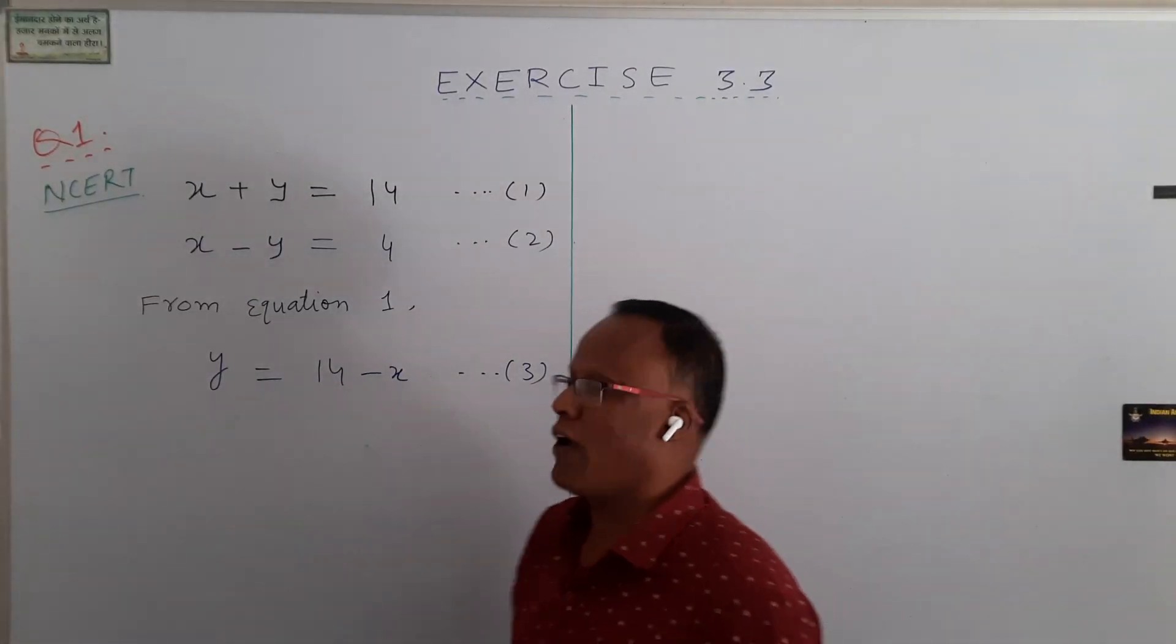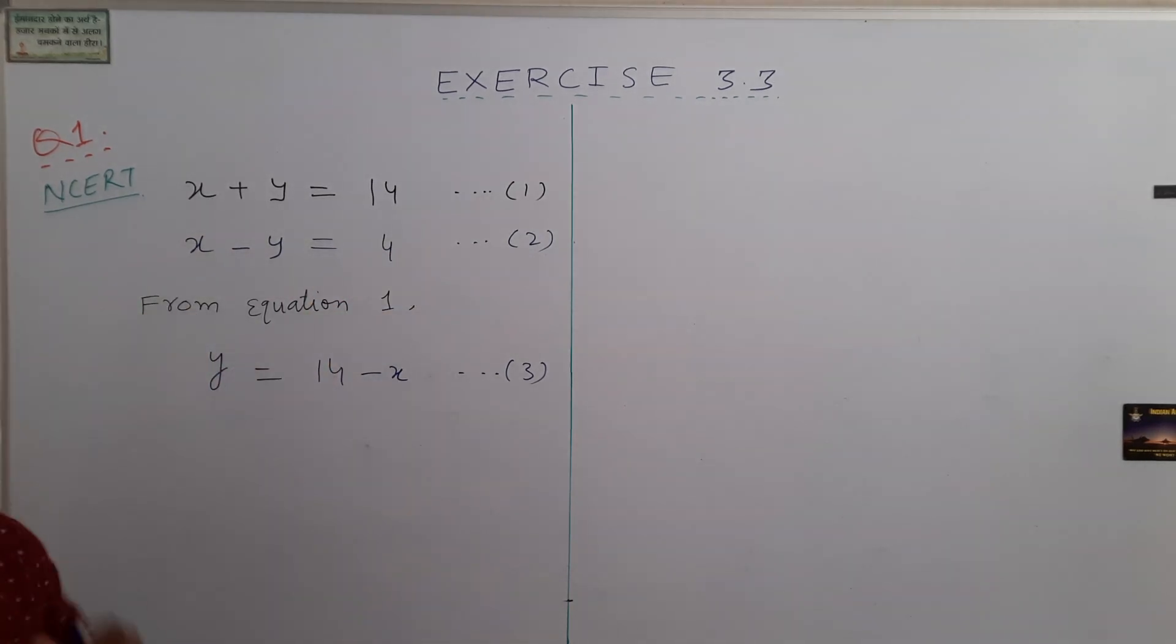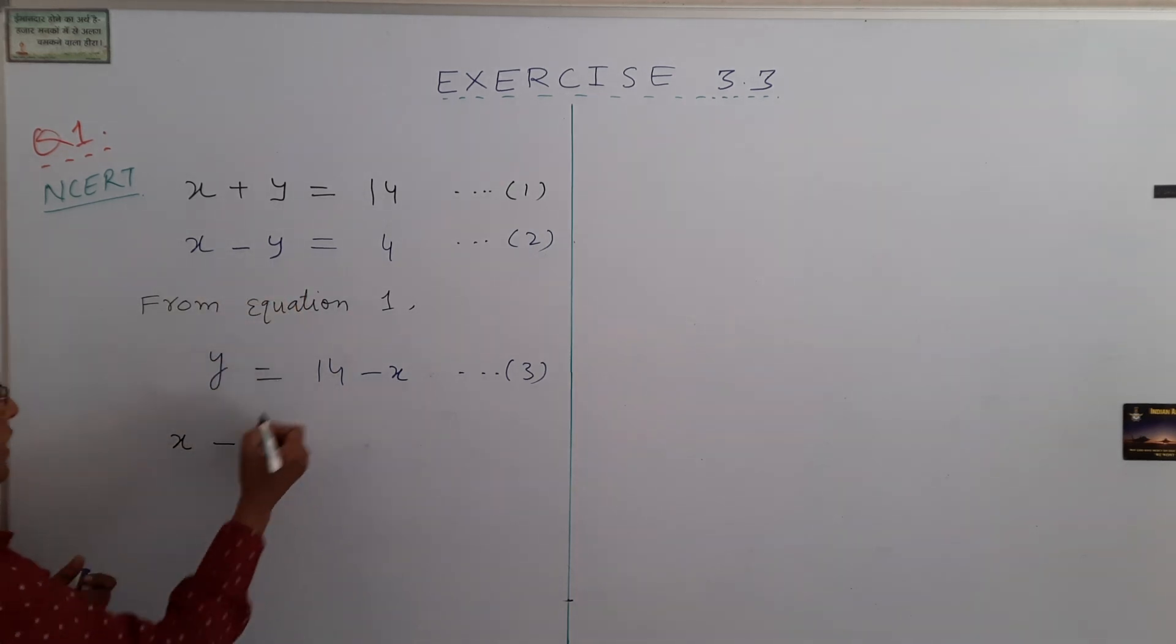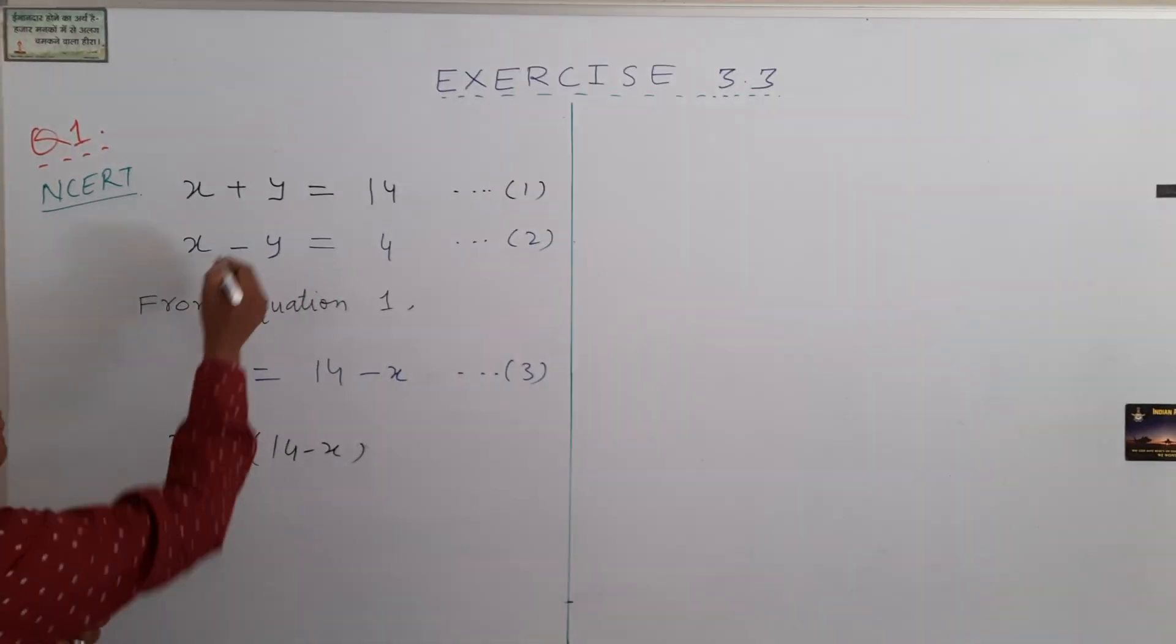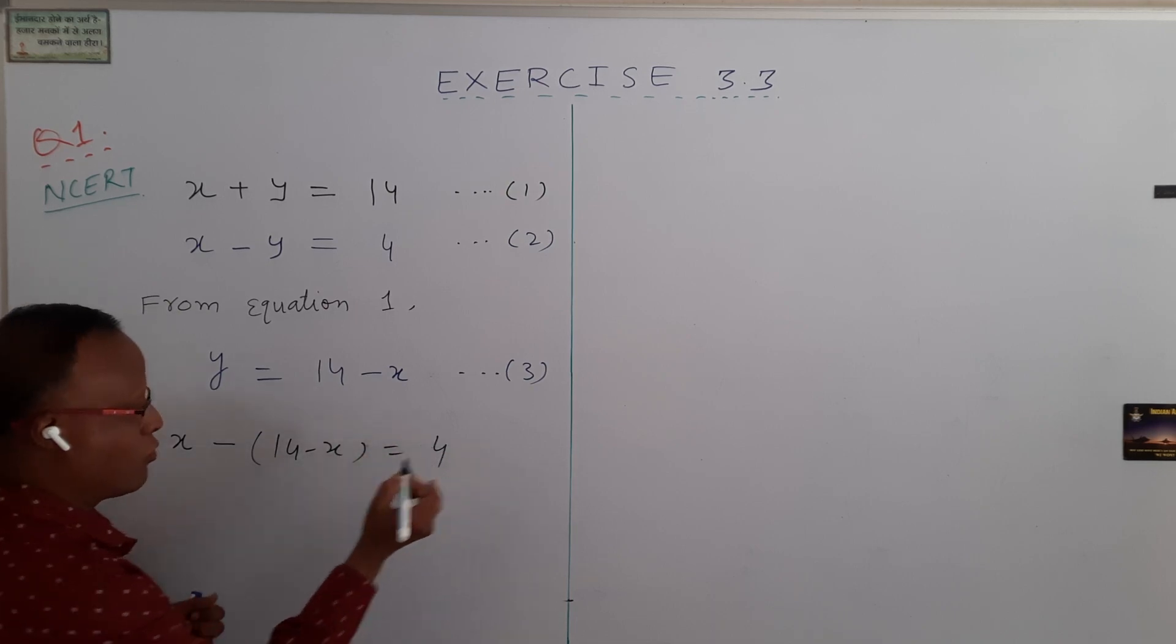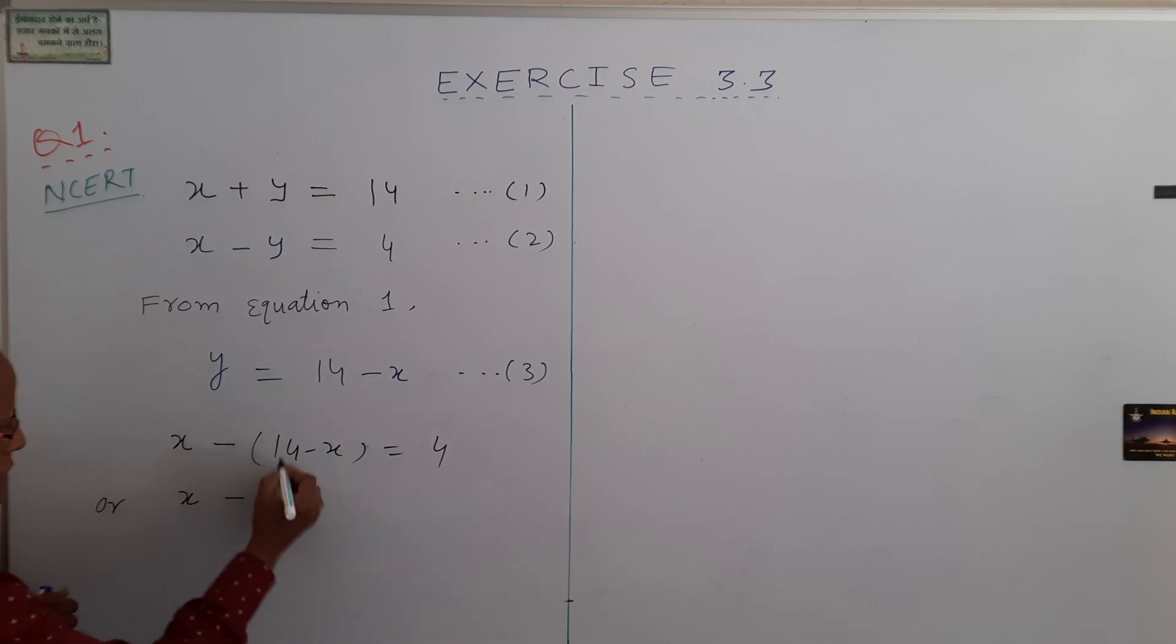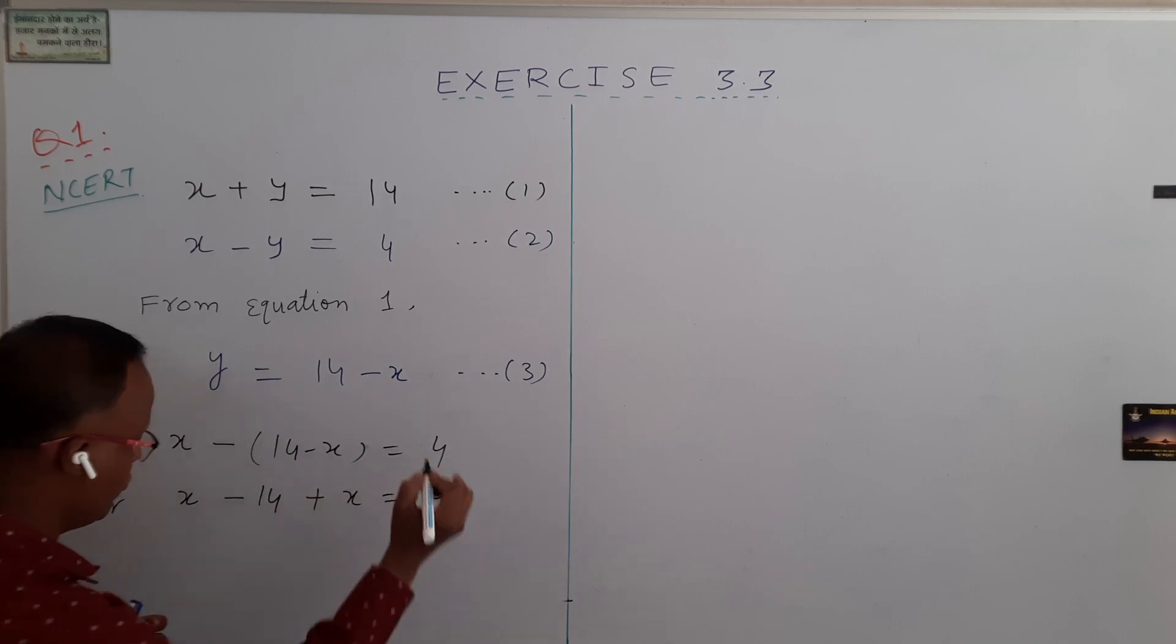Now substitute this value of y from equation number 3 into equation number 2. We get x minus, in place of y, we have to write down 14 minus x. Please use your bracket because here is minus, so when you open it, the sign will change. Equal to 4. Now simplify it. So x minus 14 minus minus plus, becomes x equal to 4.